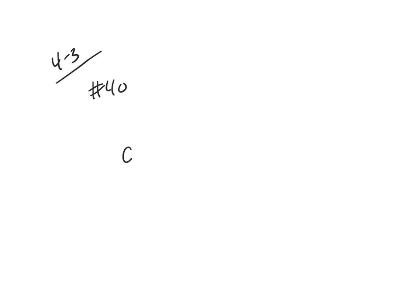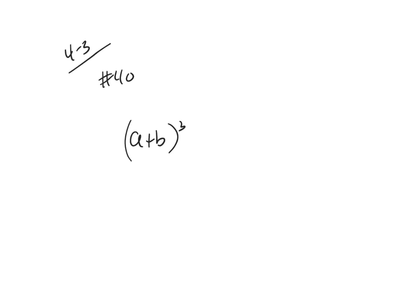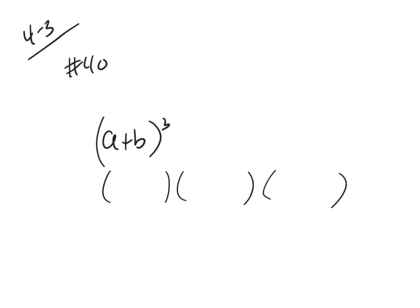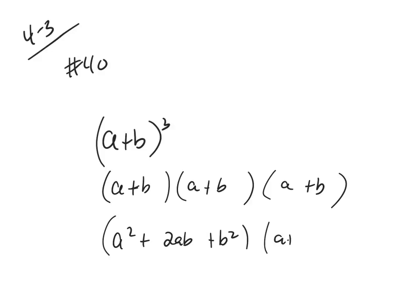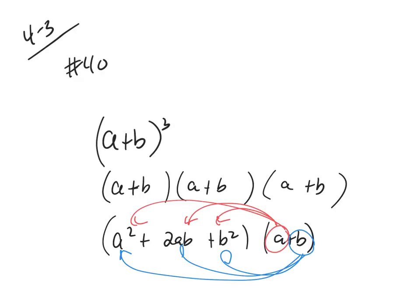For (a + b)³: approach it as (a + b)(a + b) first — ignore the third factor temporarily, multiply out the first two, then distribute that result by the remaining (a + b). Take this a, distribute it to all three terms of the expanded binomial; take this b, distribute that to all three; then sum together all six terms. It's just messy, honestly — that's all it is.